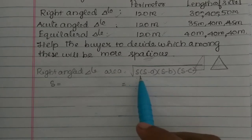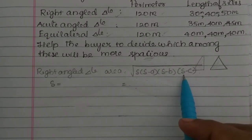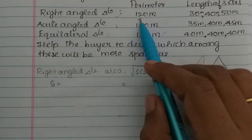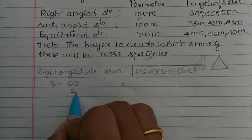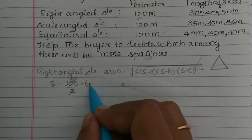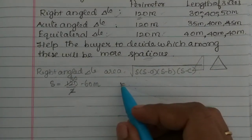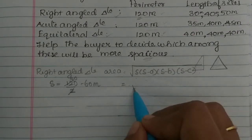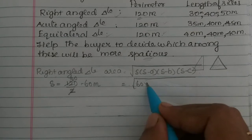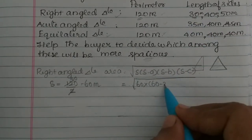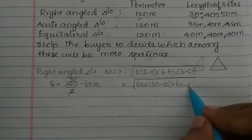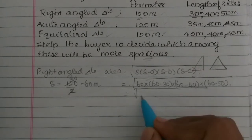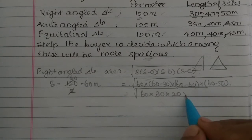First, the right angle triangle. Using Heron's formula: area equals root of s(s−a)(s−b)(s−c). The perimeter is 120m, so s equals 120 divided by 2, which is 60 meters. The sides of the right angle triangle are 30m, 40m, and 50m. So area equals root of 60 into (60−30) into (60−40) into (60−50), which is root of 60 into 30 into 20 into 10.